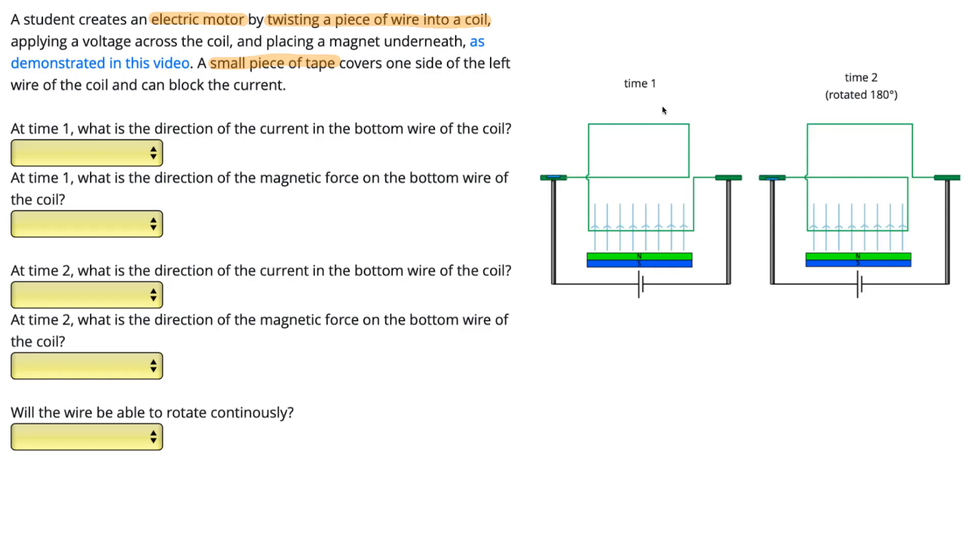Now let's look at what's going on and figure out the direction of the current in the bottom wire of the coil at time one.